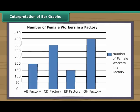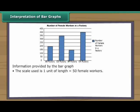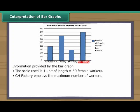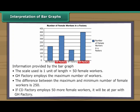Let us interpret one more bar graph. This is a vertical bar graph showing details of female workers in a factory. The scale used is: one unit of length equals 50 female workers. GH factory employs the maximum number of workers. The difference between the maximum and minimum number of female workers is 250. If CD factory employs 50 more female workers, it will be at par with GH factory.